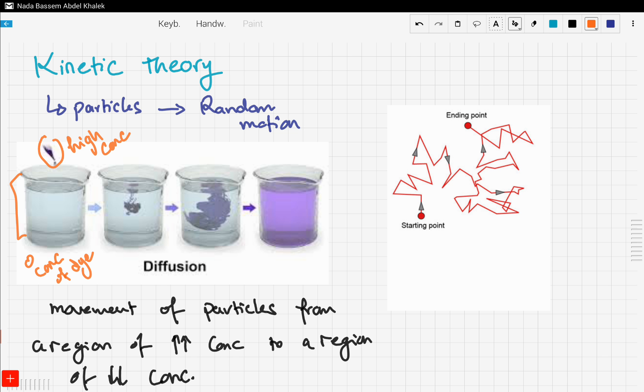Now as you see here, the dye diffused into the water in a random manner until it dominated the whole beaker of water. So this is why diffusion explains kinetic theory of matter, because it explains the random motion and particles moving with a certain kinetic energy.